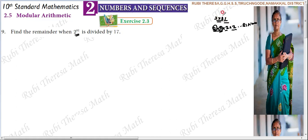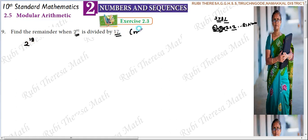So, 2 to the power 81: when we have repeated multiplication, we express it in exponential form. Now, 2 power 81 divided by 70 — the actual statement is: 2 power 81 is your dividend. This number is to be divided by 70. So what is your mod value? Mod 70. The divisor is your mod value.